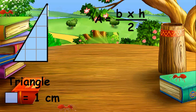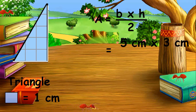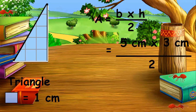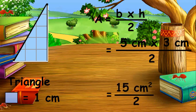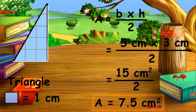Finding the height: 1, 2, 3, 4, 5 — the height is 5 centimeters. The base is 1, 2, 3 — that's 3 centimeters. Now we multiply: 5 times 3 equals 15, divided by 2 equals 7.5. Therefore, the area of the triangle is 7.5 square centimeters.